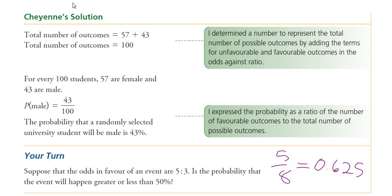What are the odds of getting a head when you flip a coin? Favorable is 1, non-heads is 1, so the odds are 1 to 1. You never hear that in real life — you say 50-50. That's how we express odds of 1 to 1: as 50-50. The probability is 1 over 2, and the odds are 1 to 1.